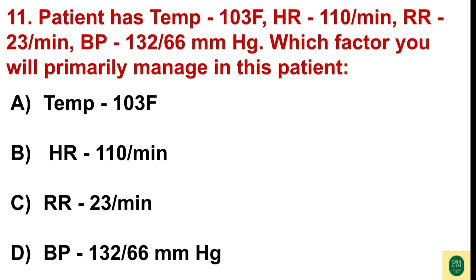A patient has temperature 103°F, HR 110 per minute, RR 23 per minute, BP 132/66 mmHg. Which factor will you primarily manage? Option A: temperature 103°F. Option B: HR 110 per minute. Option C: RR 23 per minute. Option D: BP 130/50 per minute.